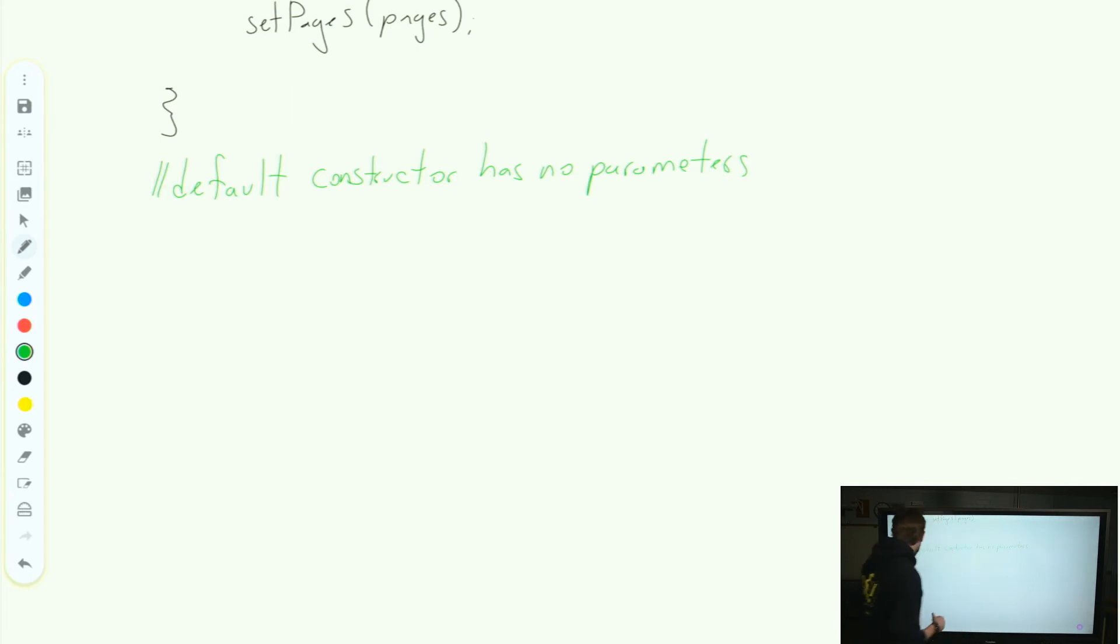We can create our new constructor. Open and close our parentheses to indicate no parameters, and we go ahead and write new constructor. This is overloading, like we've already done with some of our methods. It has the same beginning of the signature, but the parameter list is different.